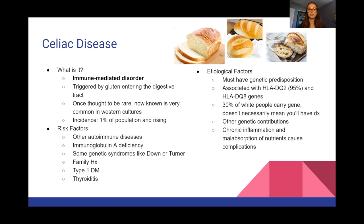In order to have celiac disease, you must have a genetic predisposition — this isn't something you can just randomly develop. It's associated with the HLA-DQ2, which is most common, and the HLA-DQ8 genotypes. 30% of white people carry this gene, but just because you have the gene doesn't necessarily mean you're going to get celiac disease. What causes the complications is chronic inflammation and malabsorption of nutrients.